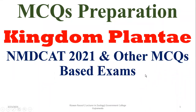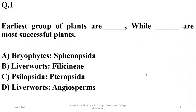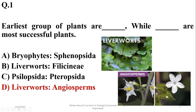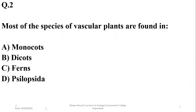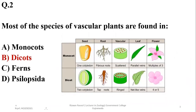Question number one: which is the least advanced group of plants? Liverworts (Hepaticopsida) and bryophytes are less advanced, while angiosperms are flowering plants considered the most successful group of plants on land, so delta is the right option. Angiosperms account for 235,000 species out of a total 360,000 species of vascular plants.